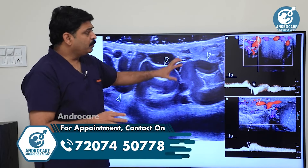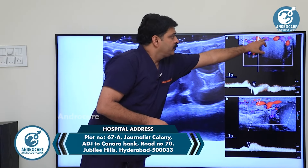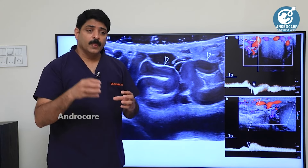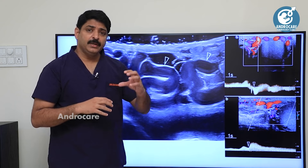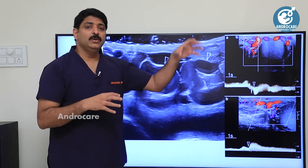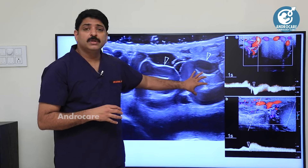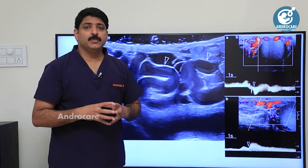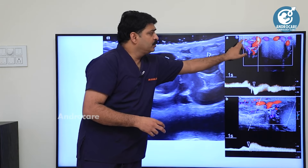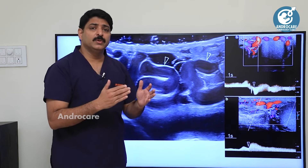If you look at a normal grade 1 varicocele, there are small veins. For grade 3 varicocele, there are also small veins. You can classify all the veins by their diameter. The vein diameter normally ranges from 2 to 3 mm, which is grade 2. If less than 2 mm, it is grade 1.